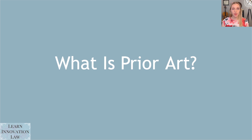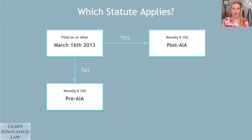The statute that addresses whether something is prior art for a patent is a little bit complicated. What complicates it even further is that there are two versions of this statute that might apply depending on what date the patent was filed. So if you have a patent that was filed prior to March 16, 2013, that patent is going to be addressed under what's called the pre-AIA, or before the America Invents Act, version of this statute.